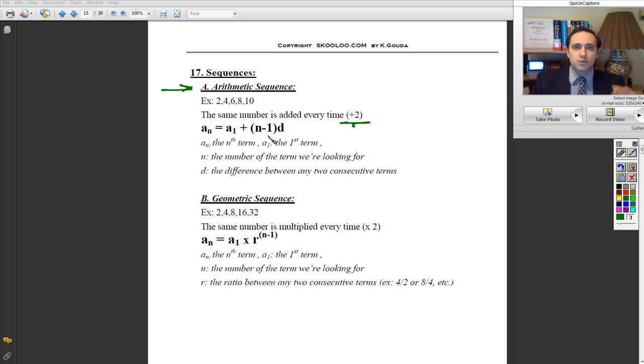How do I get the term, a certain term that I'm being asked for in the test? This is the rule we use to know any term we need to know in a sequence like this. An is the nth term. So if I want the 50th term, for example, it would be a50. It equals a1, which is the first term, 2,